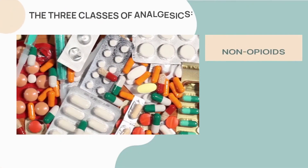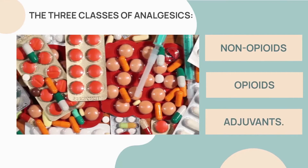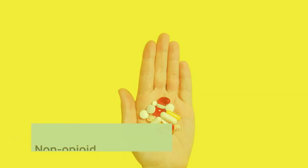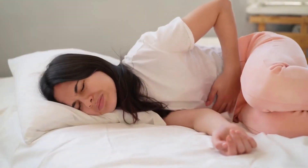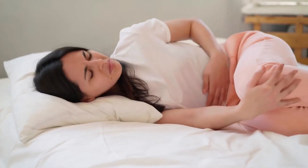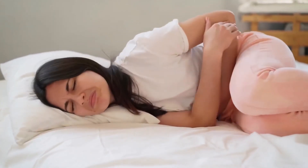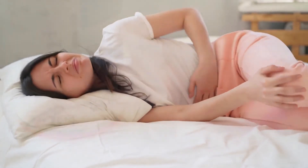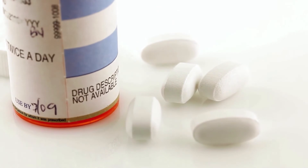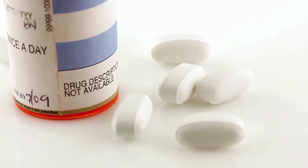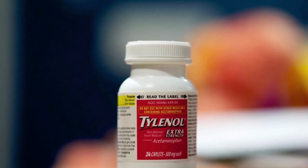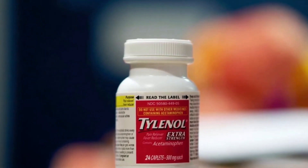The three classes of analgesics are non-opioids, opioids, and adjuvants. Non-opioid analgesics are appropriate for treating mild to moderate pain and are often added to opioids for more intense pain. They also have antipyretic and anti-inflammatory properties. Acetaminophen is most often used alone or in combination with other medications.